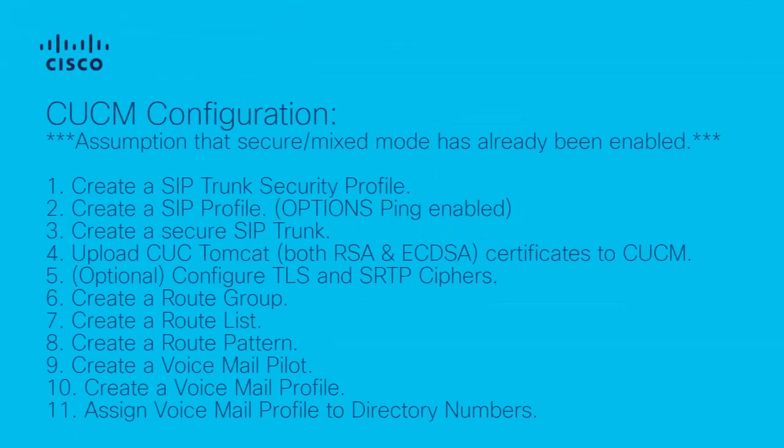To configure Call Manager for next-generation security — assuming the cluster has already been enabled for mixed mode — the steps are: first, create a SIP trunk security profile; second, create a SIP profile with options ping enabled; third, create a secure SIP trunk; fourth, upload CUC Tomcat certificates to Call Manager; fifth is an optional step to adjust cipher negotiation requirements; sixth, create a route group; seventh, create a route list; eighth, create a route pattern; ninth, create a voicemail pilot; tenth, create a voicemail profile; and eleventh, assign the voicemail profile to directory numbers.